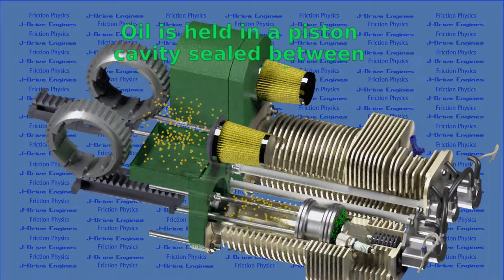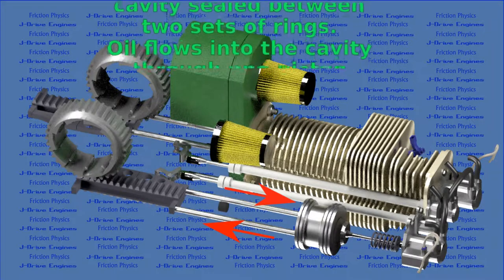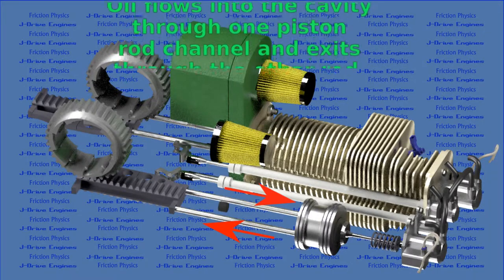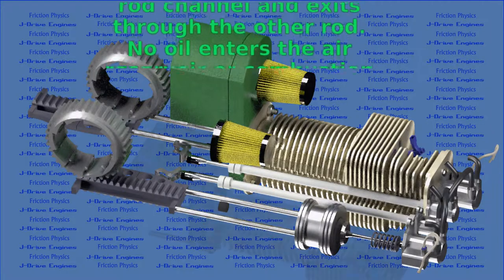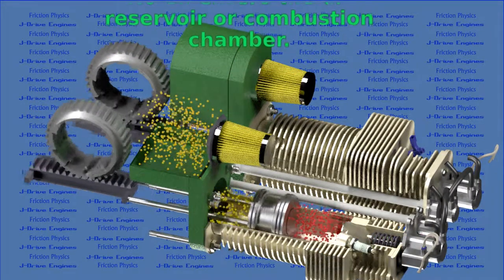Oil is held in a piston cavity sealed between two sets of rings. Oil flows into the cavity through one piston rod channel and exits through the other rod. No oil enters the air reservoir or combustion chamber.